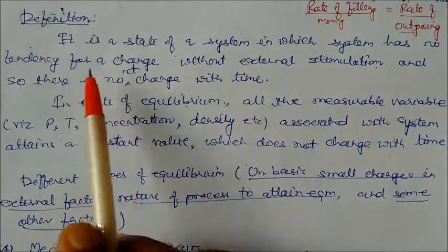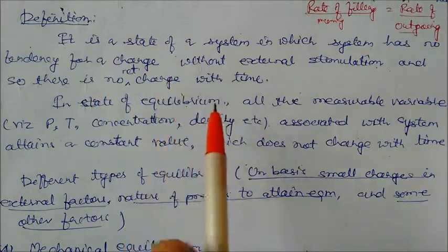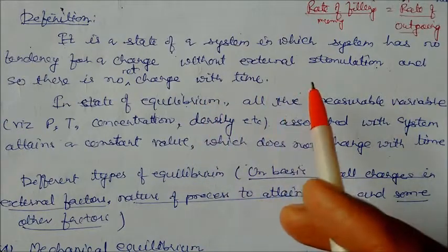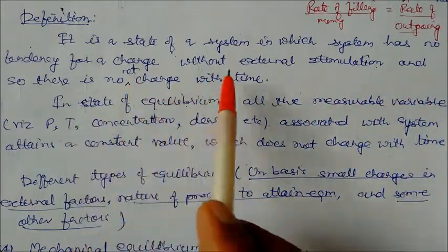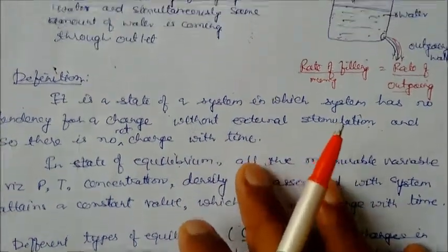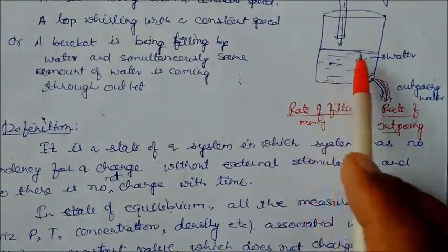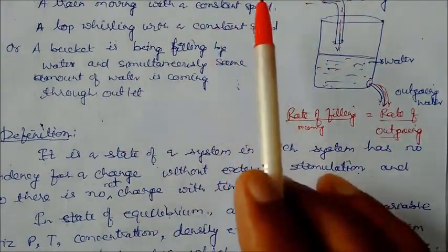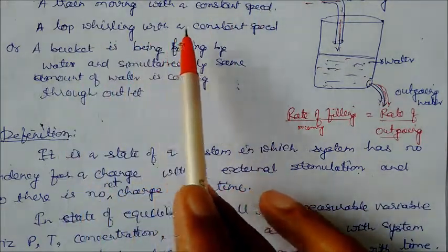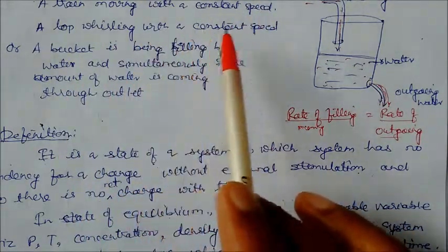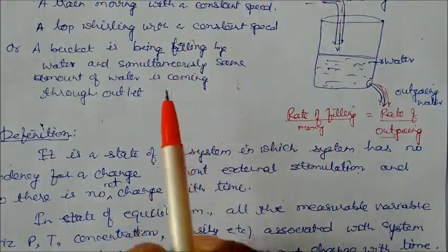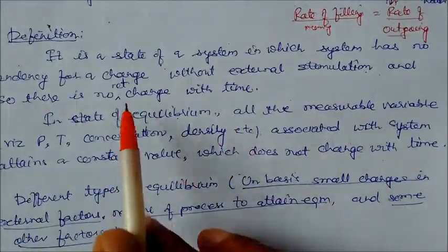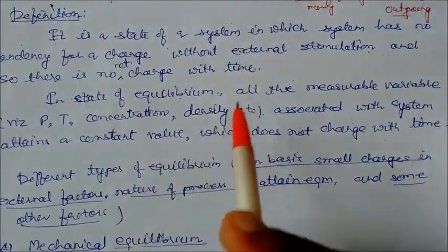So the system has no tendency for change. As we saw with incoming and outgoing water, change was going on but we could see no net change. There is no net change with time. As we have seen, the level of water is the same all the time; the speed of the moving train is always the same; a top whirls at constant speed. A book placed on the table is again a position of equilibrium — it does not change with time without any external tendency applied.